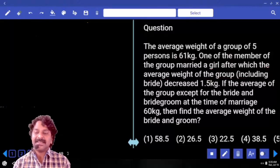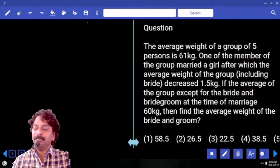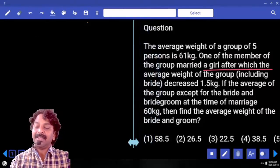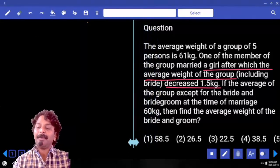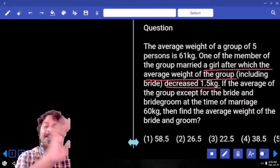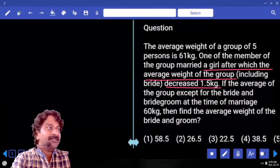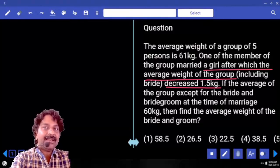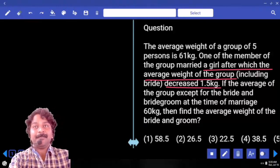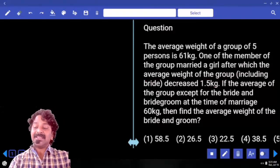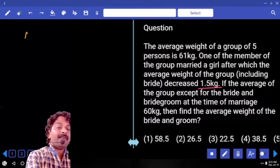The average weight of a group of 5 persons is 51 kg. One of the members of the group married a girl, after which the average weight of the group decreased by 1.5 kg. So after marriage, how many people are there? Six members. And for those six members, the average decreased by 1.5.